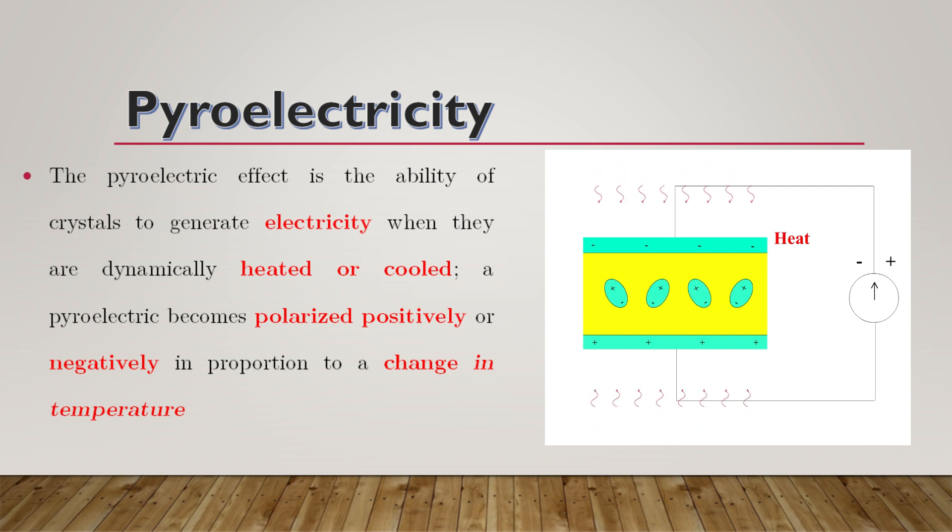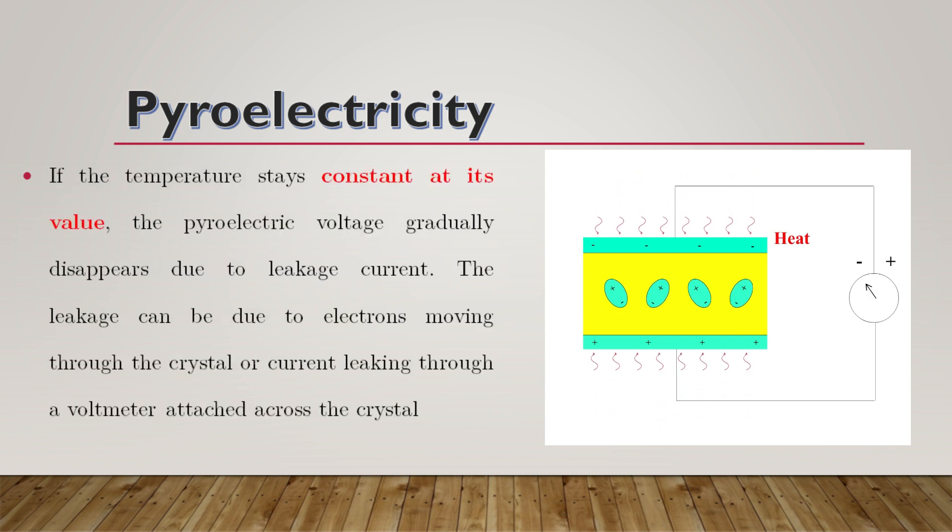A pyroelectric becomes polarized positively or negatively in proportion to a change in temperature. If the temperature stays constant at its new value, the pyroelectric voltage gradually disappears due to leakage current.